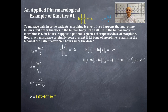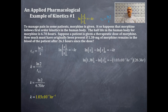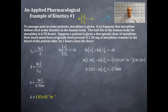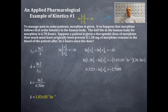Plugging in values: natural log of 1.38 minus natural log of x sub-naught equals negative 1.03 times 10 to the negative 1 per hour times 26.3 hours. Make sure your rate constant and time are in the same units — the hours cancel out. Natural log of 1.38 equals 0.3221. The right-hand side — the product of the rate constant and time — gives negative 2.7089.